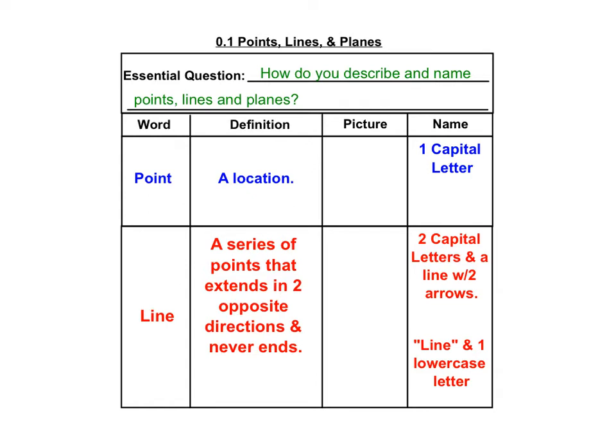Let's start with our first vocab. What is a point? The definition of a point is a location. In a picture, a point is going to be denoted with a dot and a capital letter by that dot. So if this was my picture, I would call this Point A, or you can just say Capital A.